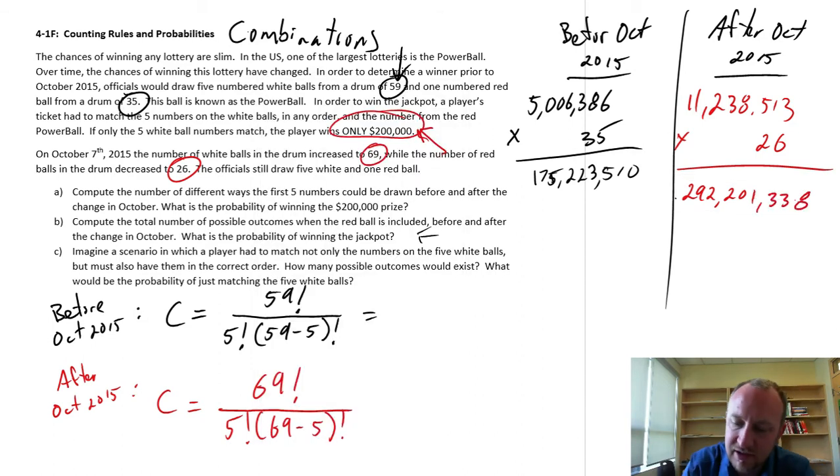So as a result of that change, they've significantly reduced the likelihood of winning both the $200,000 prize and the jackpot. It's become significantly harder now to match those balls that may come out. So there's our answers to A and B.